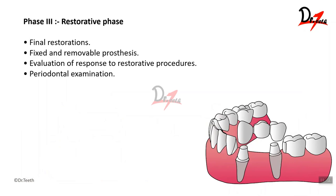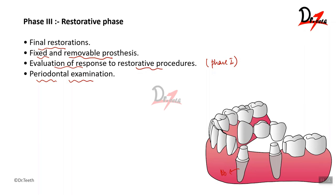Coming on to phase three, the restorative phase, also called the prosthetic phase. This includes placement of restorations and prosthesis — any kind of final restorations, fixed and removable prosthesis placement, and evaluation of the response to any restorative procedure. If you have done a temporary restorative procedure in phase one, this is the phase where you go back and evaluate the response to that restoration. If you have taken a tooth as an abutment and placed an FPD, this is the phase where you again evaluate the periodontium of that area. Phase three is all about placing restorations and prosthesis to revert back the function of the dentition and help with aesthetics in the anterior region.